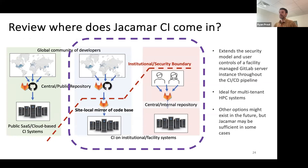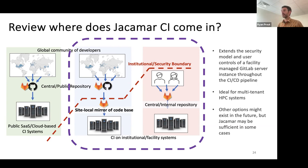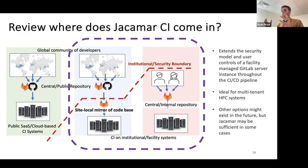Jacamar really fits those two scenarios on the right. It extends the security model and user controls of a facility-managed GitLab server to the CI/CD pipeline — that's the site-local mirror instance. It's ideal for multi-tenant HPC systems: you can have it installed on the login node, make it available to projects in your site's GitLab repository, and allow users to use the HPC system for builds and tests in their CI workflow. In the future there might be other options — if the Kubernetes idea turned out to be a good one, we'd work towards that. Maybe Jacamar is still applied in certain scenarios but we use cloud-native tools in others. Various models could work out depending on what we do with the infrastructure.